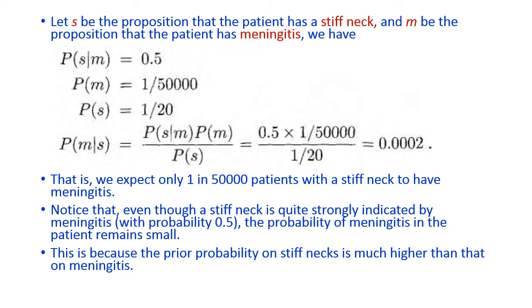Let S be the proposition that the patient has a stiff neck and M be the proposition that the patient has meningitis. We have: P(S|M) = 0.5, P(M) = 1/50,000, and P(S) = 1/20. Then P(M|S) = P(S|M) × P(M) / P(S) = 0.5 × (1/50,000) / (1/20) = 0.0002.